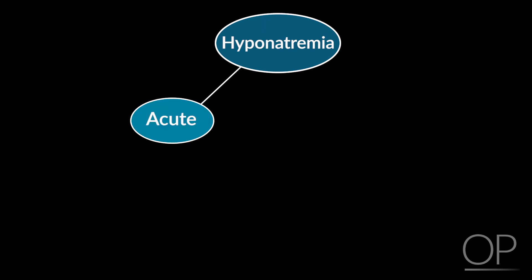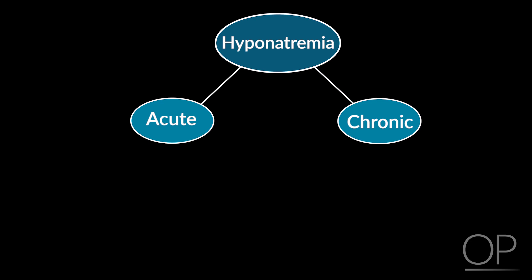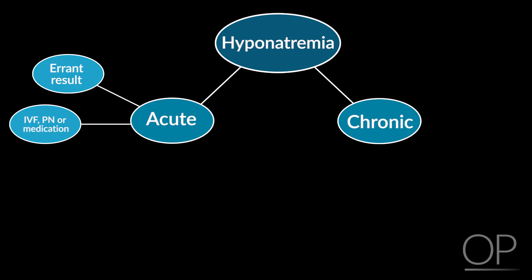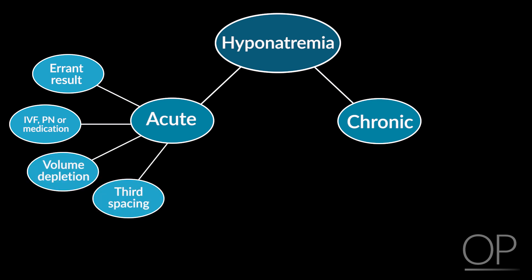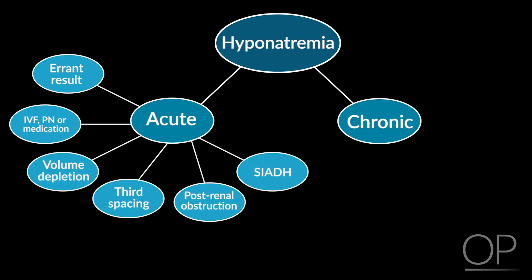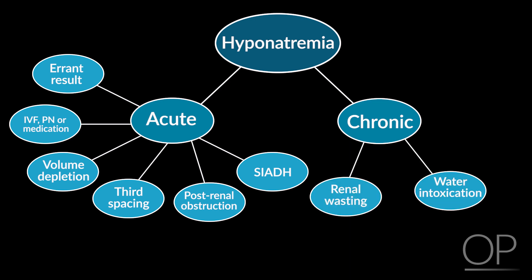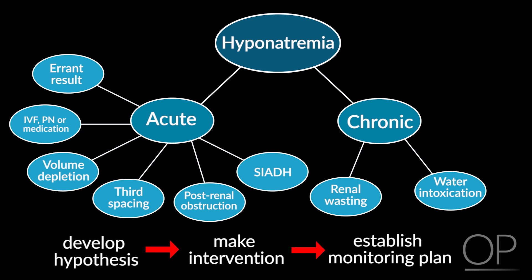A review of hyponatremia in the bone marrow transplant patient includes evaluating for acute and chronic issues. Acute issues include an errant result, IV fluid or parenteral nutrition or medications, volume depletion, third spacing, or SIADH. Chronic causes include renal wasting and water intoxication. Evaluation should be performed rapidly and lead to an intervention and appropriate follow-up. After developing a hypothesis and making an intervention, establish a monitoring plan for following the sodium and chemistry at some interval, like every six hours.